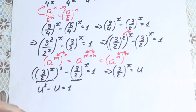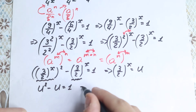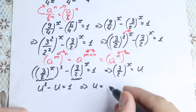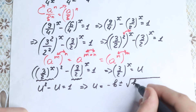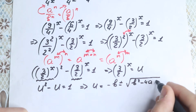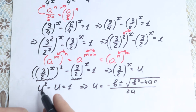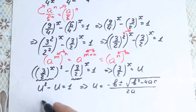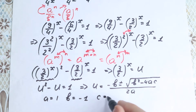This quadratic equation we can easily solve. We all know how to solve it. Using the quadratic formula, u equals negative b plus or minus the square root of b squared minus 4ac, all over 2a. We know that a equals 1, b equals negative 1, and c equals negative 1, because we bring the 1 to the left-hand side.